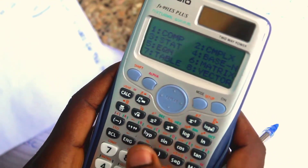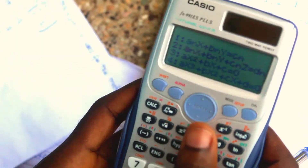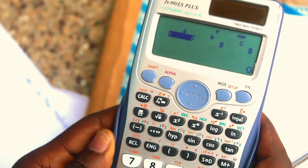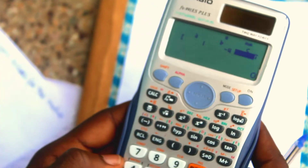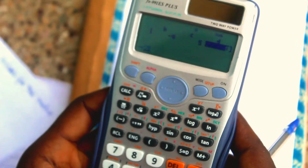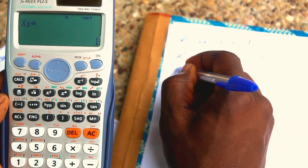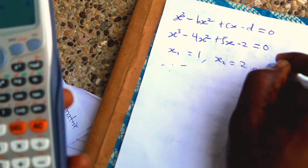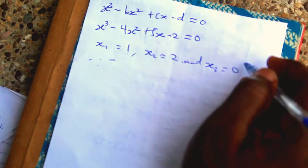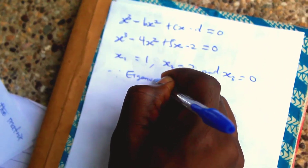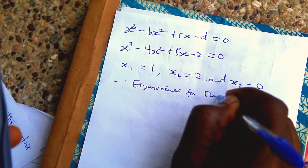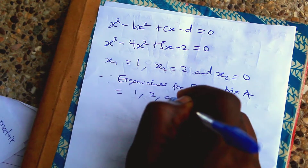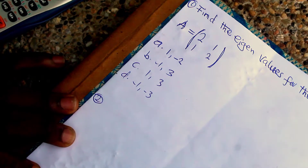Go to Mode, select 5 for equation, then 4 for polynomial. Enter the coefficients: 1 for s cubed, minus 4, positive 5, and minus 2. Solving gives x1 equals one, x2 equals two, and x3 equals zero. Therefore the eigenvalues of matrix A are one, two, and zero.